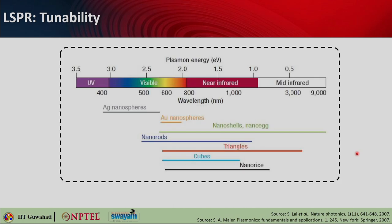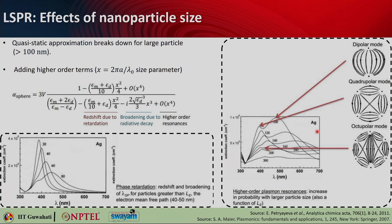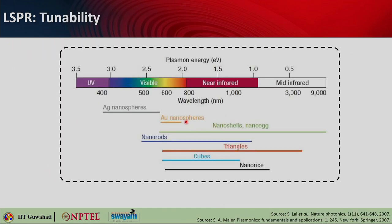It is possible to have different plasmon resonances with a single material sphere like gold or silver, but the resonance strength weakens and becomes too broad. Looking at the tunability chart: silver nanospheres scatter from 380 to around 600 nm, gold nanospheres from around 520 to 660 nm. However, nanoshells or nano eggs have a very wide tunability range from visible to mid-infrared. Nano rods, triangles, cubes, and nano rice — different shapes of plasmonic nano antennas — allow plasmon resonance at very different wavelengths.